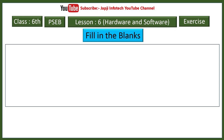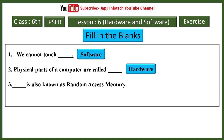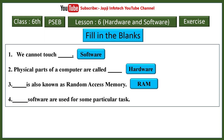Fill in the blank for lesson six. We cannot touch software. Physical parts of a computer are called hardware. RAM is also known as random access memory. Application software are used for some particular task.